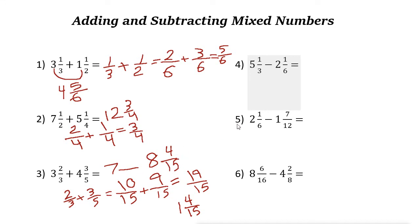Now let's look at subtraction. If the first fraction is bigger than the second fraction, you can simply subtract the whole numbers and then subtract the fractions. For example: five minus two is three, and one-third minus one-sixth — one-third is two-sixths, so two-sixths minus one-sixth is one-sixth. The answer is three and one-sixth.